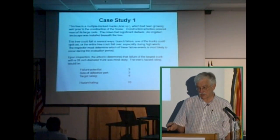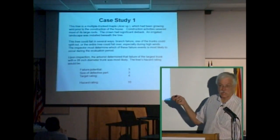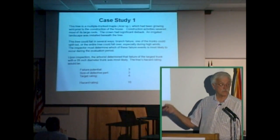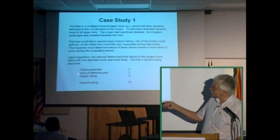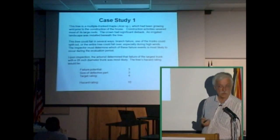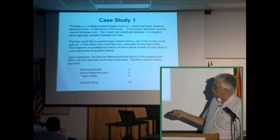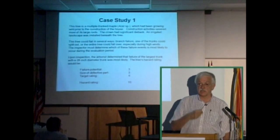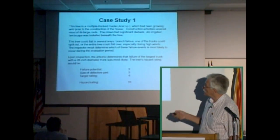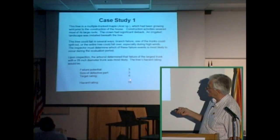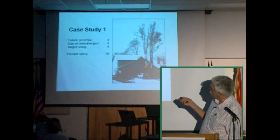The arborist assigned a high failure potential — number three. The size of the defective part was between 18 and 30 inches, so it got a number three. If it was more than 30 inches, it would have been a four; if less than six inches, a one. The target rating was a four because it was a house with a big family with lots of kids and people visiting all the time — the landscape was in constant use. So three plus three plus four equals ten. This is a picture of that structure: there's the house, and there's the tree.